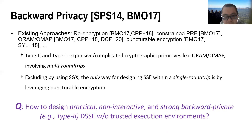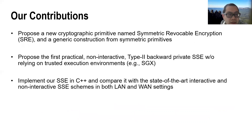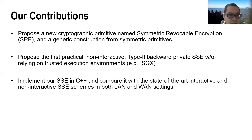So how to design practical, non-interactive, and strong backward privacy such as Type 2 backward private dynamic SSE without trusted execution environments is still left open. In this work, we make the following contributions. We first propose a new cryptographic primitive named Symmetric Revocable Encryption and give a generic construction from lightweight cryptographic tools. Then, based on this primitive, we propose the first practical non-interactive Type 2 backward private SSE without relying on trusted execution environments.